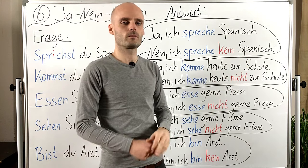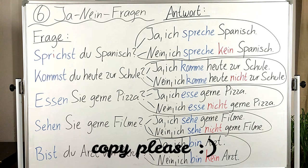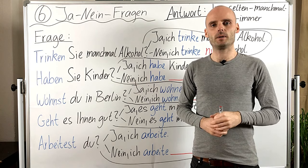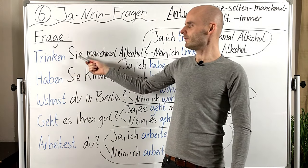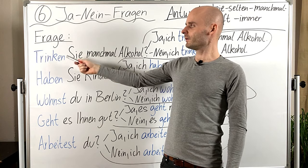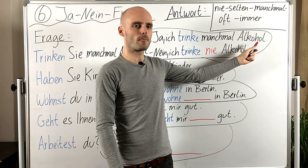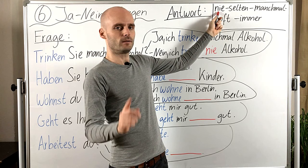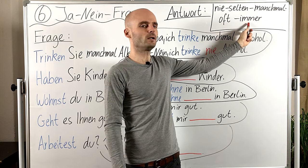Okay, machen wir noch ein paar Beispiele. Hier noch ein paar Fragen und Antworten. Frage: Trinken Sie manchmal Alkohol? — sometimes. Antwort: Ja, ich trinke manchmal Alkohol. Oder Nein, ich trinke nie Alkohol. Nie — never. Selten — rarely. Manchmal — sometimes. Oft — often. Immer — always.